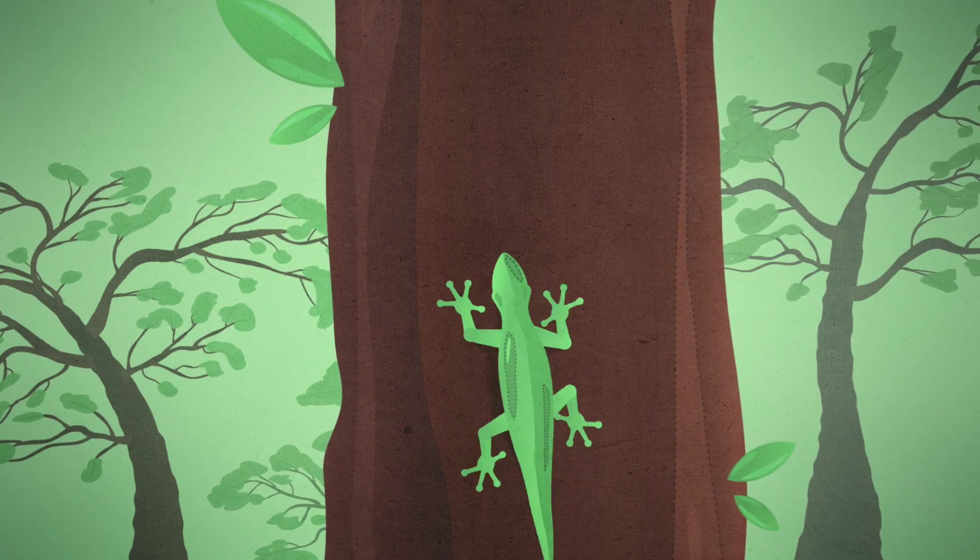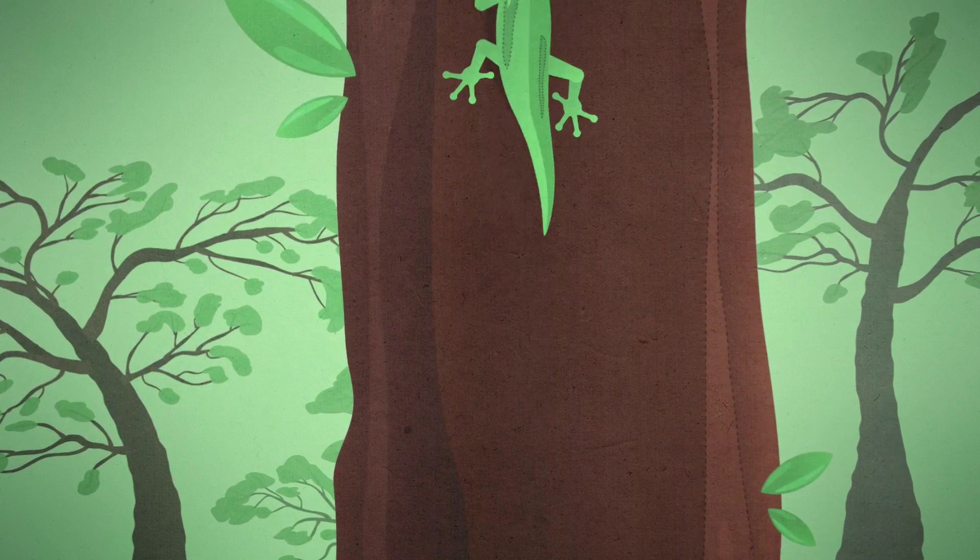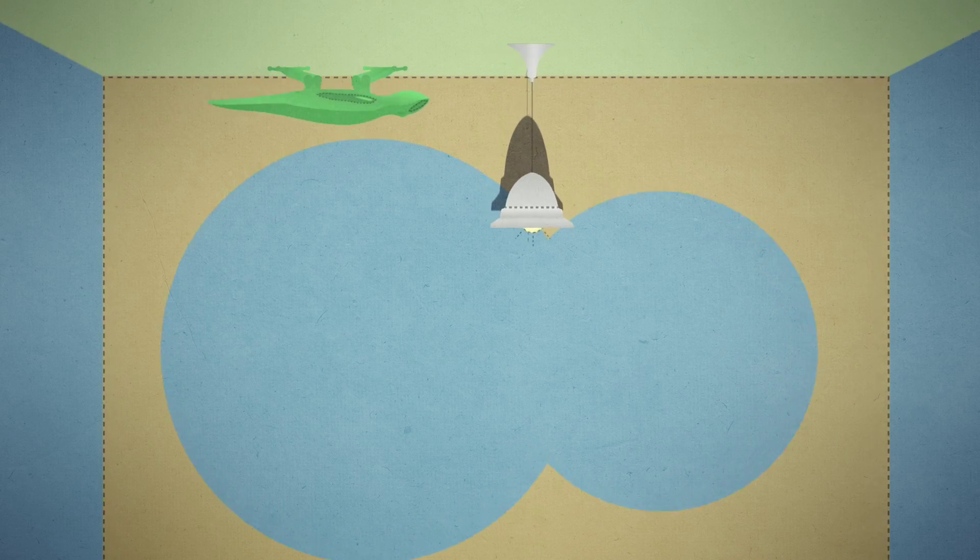By manipulating the surface in another way, we can copy the structure that the gecko lizard has under its toes, enabling the gecko to walk upside down.